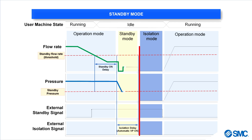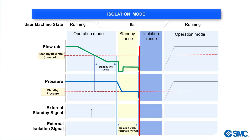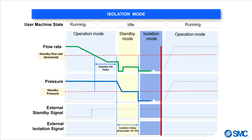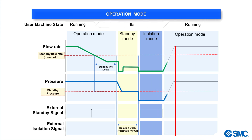Any leaks, open nozzles or vacuum applications will consume less air due to the reduced pressure. If the system remains in standby mode longer than the isolation delay time period, the system can close the residual pressure relief valve, reducing leaks and air wastage even further. When the standby signal is reset to off, the system goes back to operation mode and increases pressure back to working pressure.